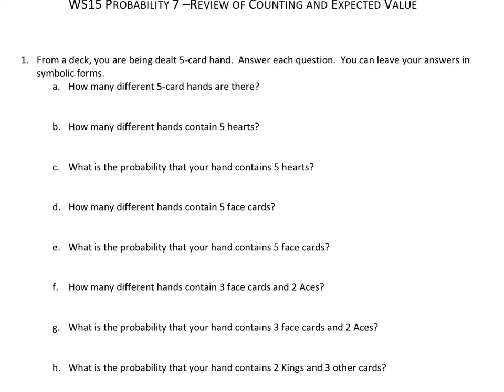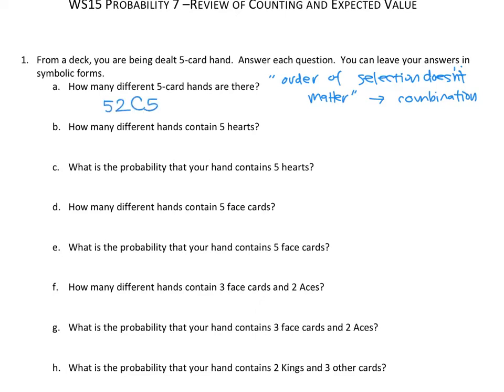Let's look at part A: how many different five-card hands are there? The order of selection does not matter, so this is a combination type situation. We're selecting five items out of 52 distinct items, so the answer is 52C5. You can leave your answer in symbolic form, so I'll leave it as 52C5.